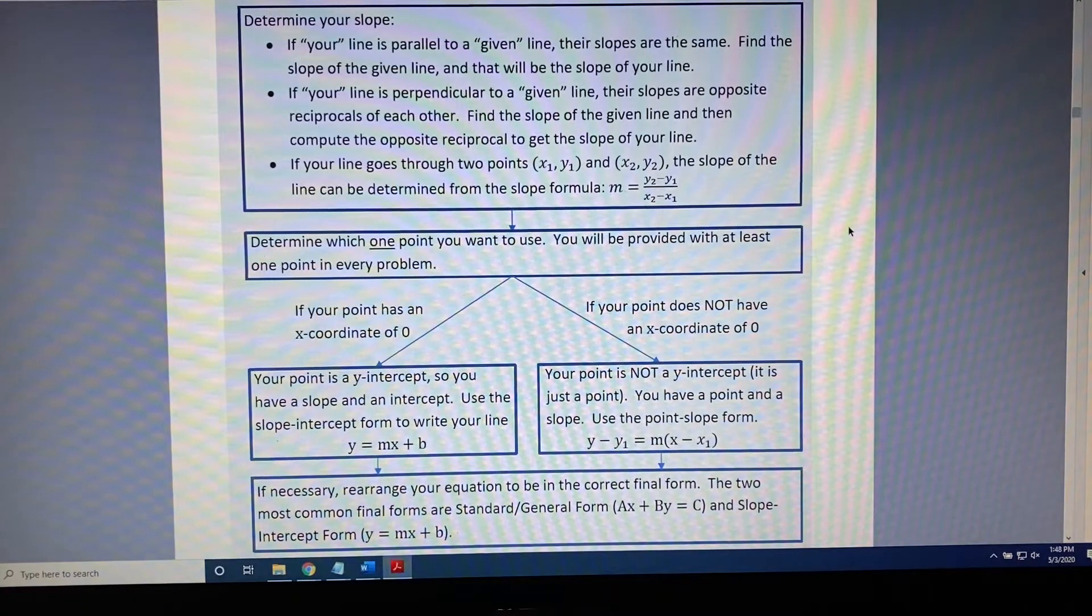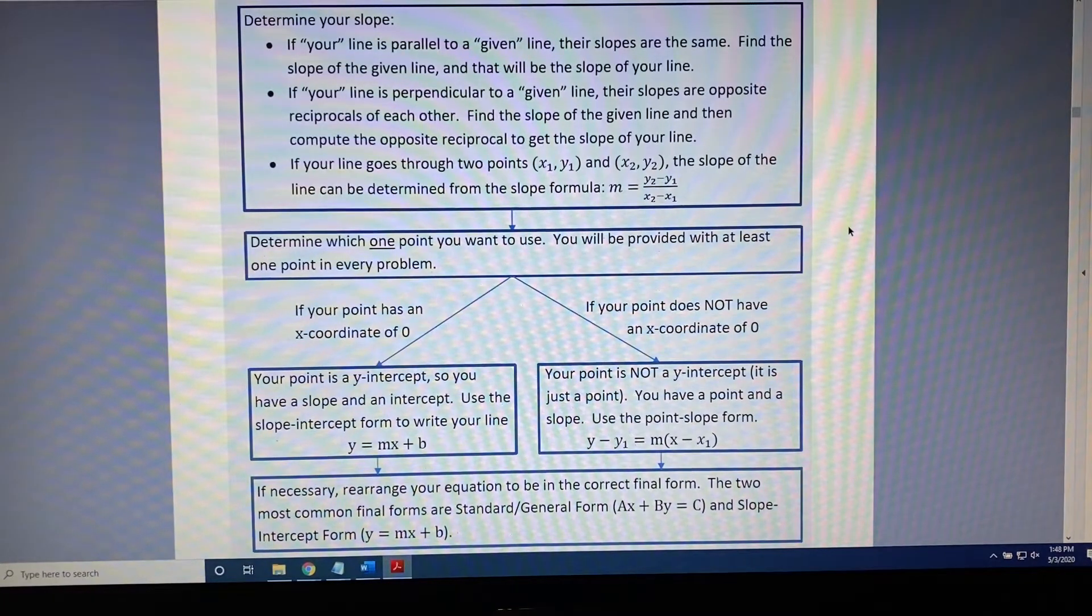Then we have a decision arrow. We will take the left path if we choose a point with an x-coordinate of 0, and we will take the right path if we choose a point with an x-coordinate that is not 0.